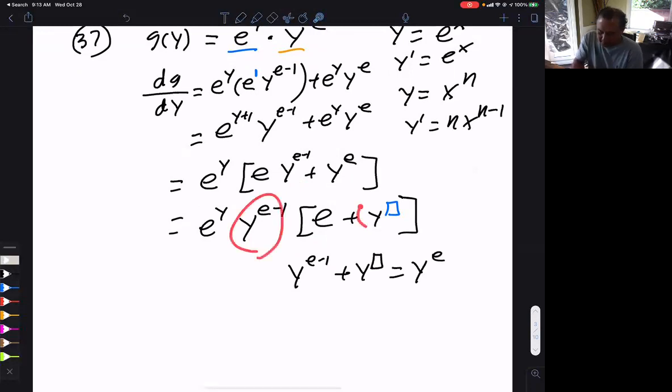So this times this. Ooh, times, not plus. Times, Yoshida. Times. This times this must equal that. Well, what must box be? One. Because you add the exponents. e minus 1 plus 1 is e. So that's a 1. So let me erase all this. We know that's a 1. Now, that's probably not the answer in the back, right?